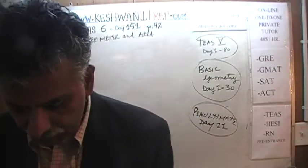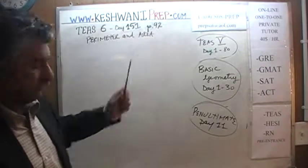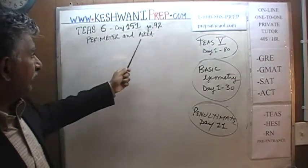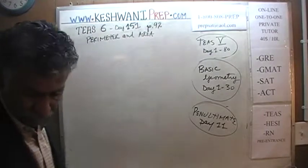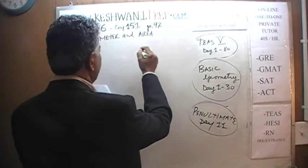Today is our lesson number 151 and we are on page number 92. We will solve a problem where we will have to deal with perimeter and area. Here is the picture that is given to us.